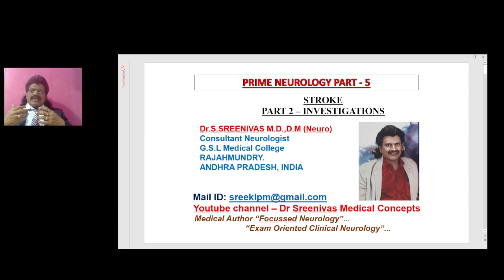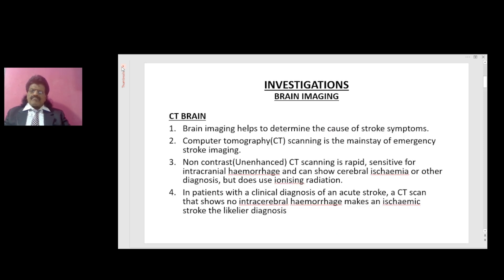We are discussing a series of lectures of Prime Neurology. There are 50 episodes of Prime Neurology, and if one listens to all 50 episodes, I am sure they would have acquired a good knowledge of neurology. We are discussing Part 5 of Prime Neurology — Stroke Part 2: Investigations. In this episode, we are going to discuss the investigations of stroke.